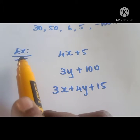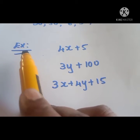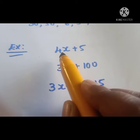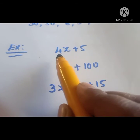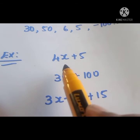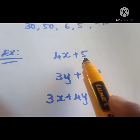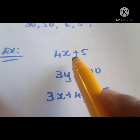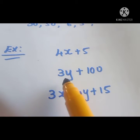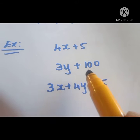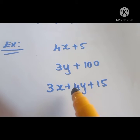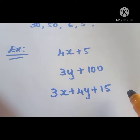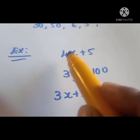Let us see some examples for Algebraic Expression. 4x plus 5 is an Algebraic Expression — it is a combination of variable and constant with arithmetic operation, where plus is the arithmetic operation. Next, 3y plus 100, and 3x plus 4y plus 15 are also examples of Algebraic Expressions.